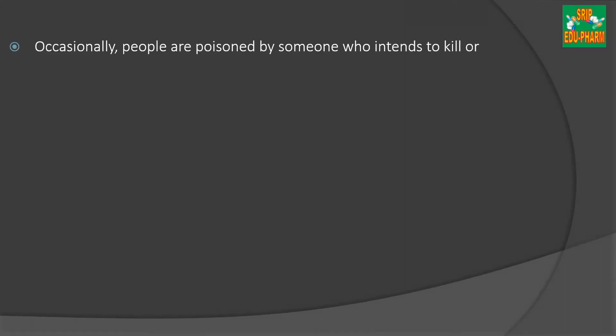In deliberate poisoning, people are poisoned by someone who intends to kill or disable them. The intention may be to rape or to rob the people. The drugs generally used to disable people are scopolamine, benzodiazepines, gamma-hydroxybutyrate, etc., as these drugs can induce sedation or amnesia or both.